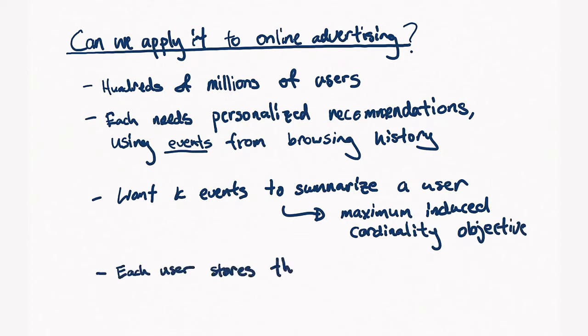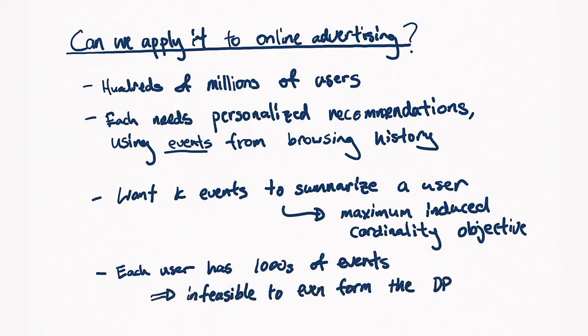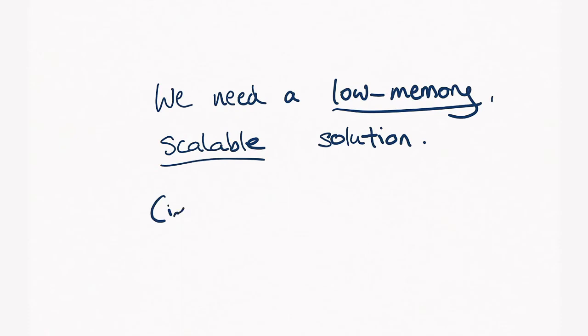Now, each user stores thousands of events on a weekly basis. And to maximize an induced cardinality objective over this is unfortunately infeasible because it takes way too much memory to even form the DPP matrix for every user. So, what we needed was a low-memory scalable solution. In other words, a streaming algorithm.